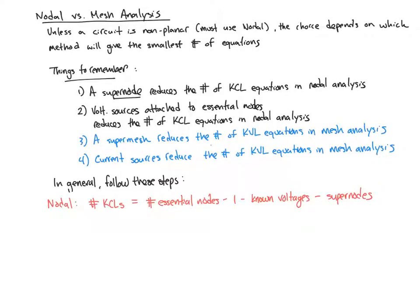When evaluating whether or not nodal analysis is the right choice, in general the number of KCLs you're going to write is going to be the number of essential nodes you have, minus one. That minus one is due to the ground, minus the number of known voltages. This is due to voltage sources attached to essential nodes, so in other words it's a known, you don't have to do a KCL there, and then minus the number of supernodes you have.